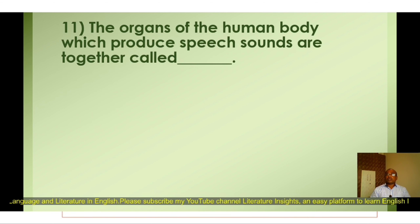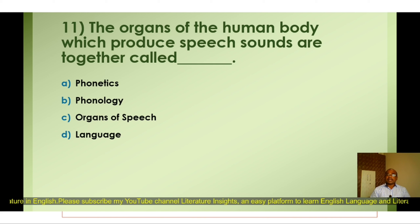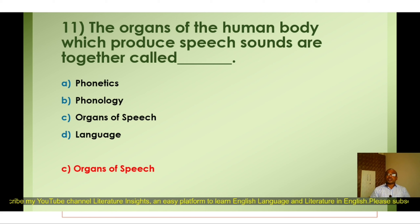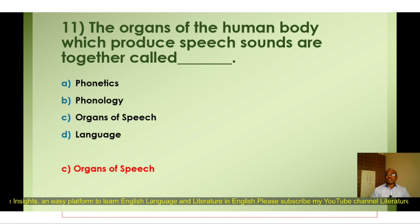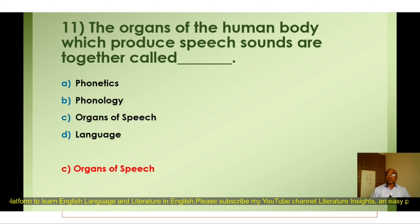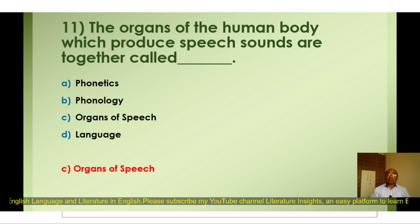Question number eleven: The organs of the human body which produce speech sounds are together called — A) Phonetics, B) Phonology, C) Organs of Speech, D) Language. The correct answer is C) Organs of Speech. In articulation or production of speech sounds, we use organs such as the lips, the tongue, the teeth, the nose, the nasal cavity, oral cavity, the alveolar ridge, the hard palate, soft palate, the vocal cords, the larynx, pharynx, and the lungs — these are all organs of speech.